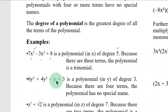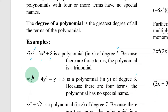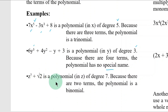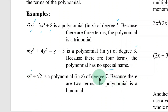6y cubed plus 4y squared minus y plus 3 is a polynomial in y of degree 3 — third degree because 3 is the highest exponent. Because there are four terms, the polynomial has no special name. Then, x to the 7th plus x root of 2 is a polynomial in x of degree 7 — a seventh degree polynomial. Because there are two terms, the polynomial is a binomial.